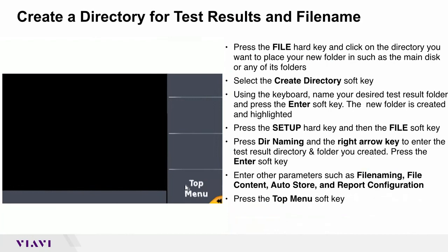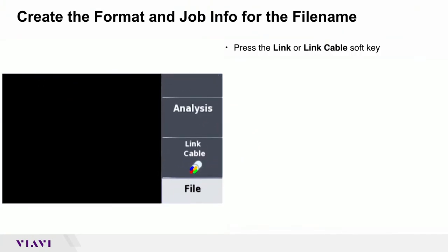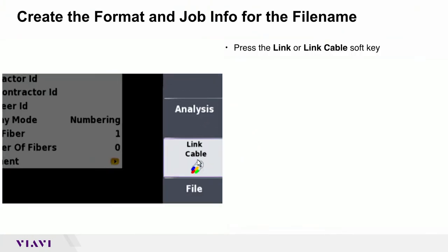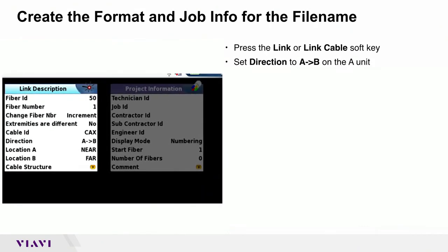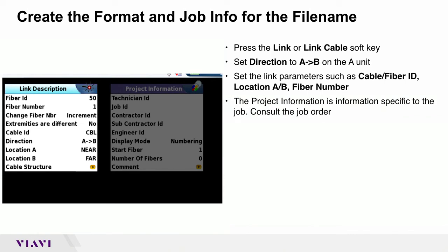Press the TOP MENU soft key. Press the LINK or LINK CABLE soft key. Set direction to A to B on the A unit. Set the LINK parameters such as cable ID, fiber ID, location, and fiber number. The project information is information specific to the job — please consult the job order.